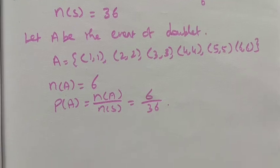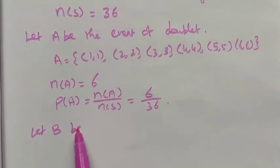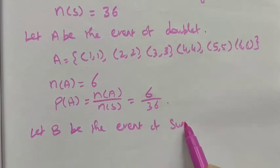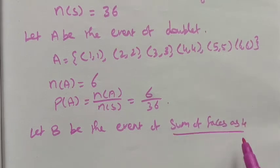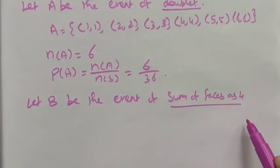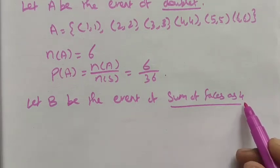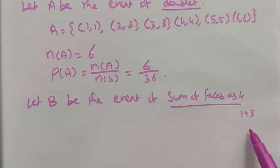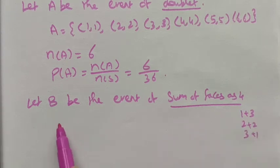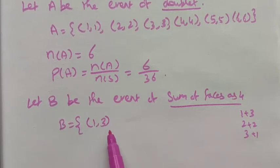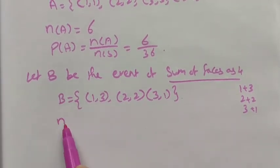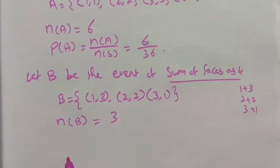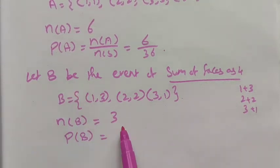Let B be the event of sum of faces equal to 4. Which numbers, when added, give 4? The possibilities are: one and three, two and two, and three and one. So B = {(1,3), (2,2), (3,1)}. These are the favorable outcomes, so n(B) = 3. Probability of B is P(B) = n(B) / n(S) = 3/36.